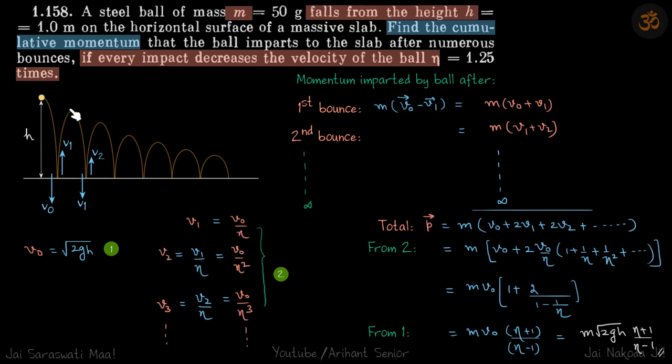This goes back with velocity v1 and it strikes the ground again with the same velocity v1. Then it jumps back with v2. So the relation between v1 and v2 is given by v2 equals v1 by eta, which is v0 by eta squared. Similarly v3 will be v0 by eta cubed and so on.